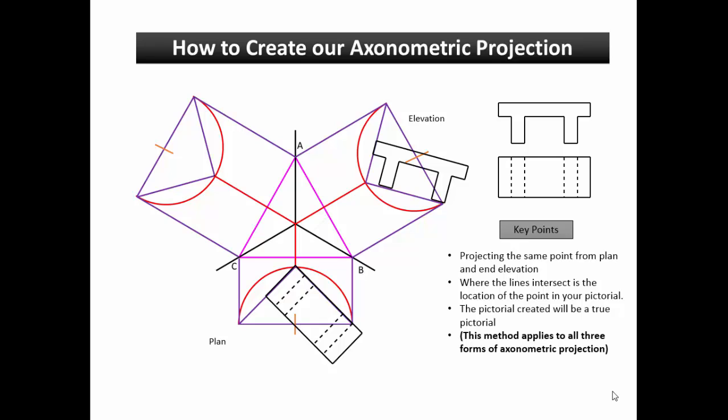An example of this would be the table top. By translating one point at a time, I can build up my pictorial.